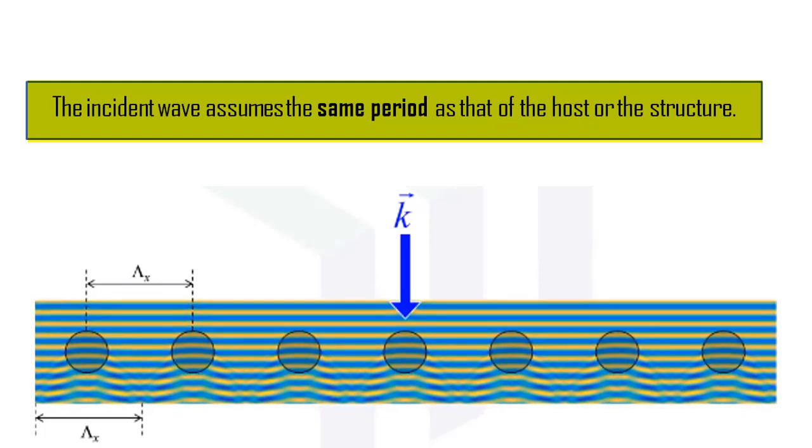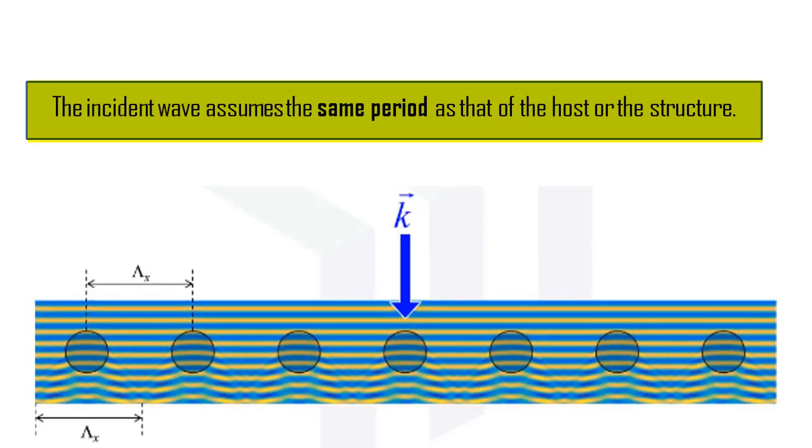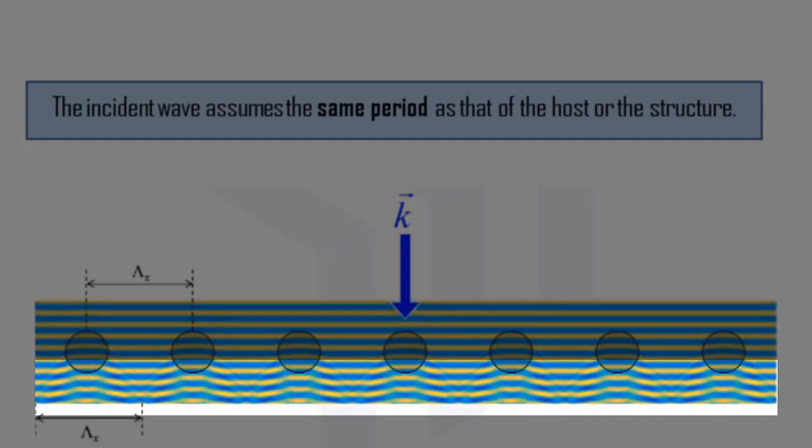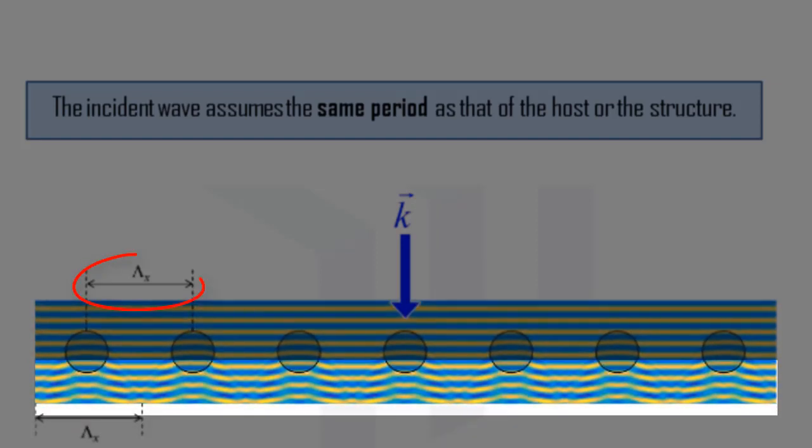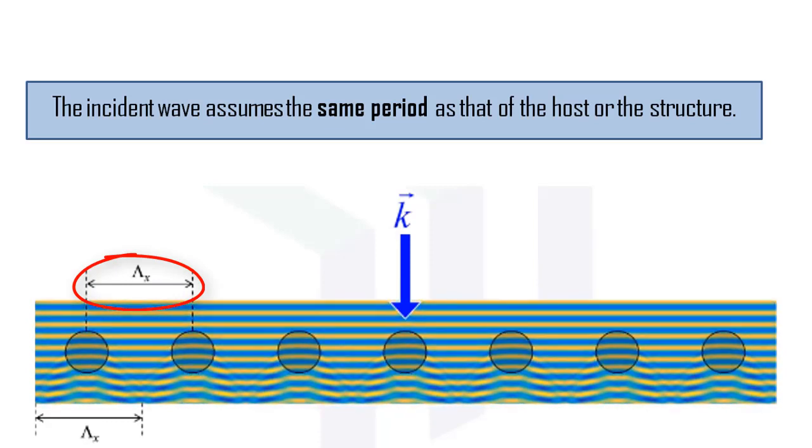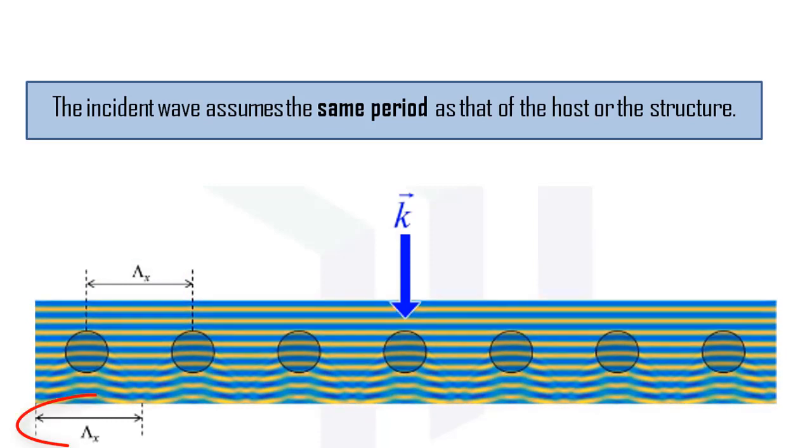It doesn't take on the same shape, it takes on the same period. We can see that the period of the structure is shown on the above as lambda sub x. The wave after it encounters this structure assumes the same period lambda sub x that is shown at the bottom.